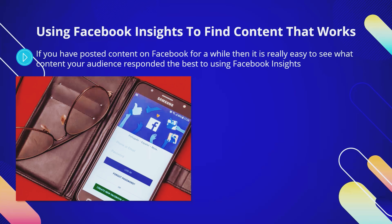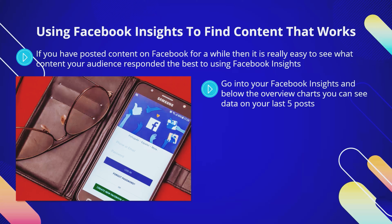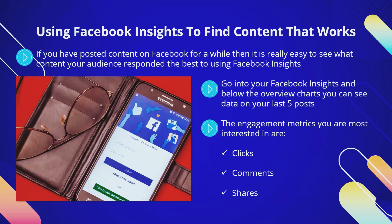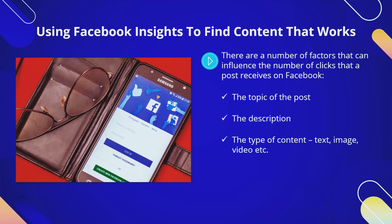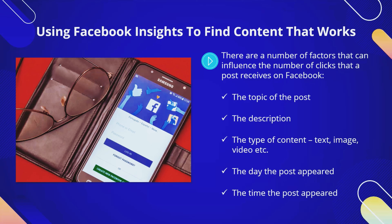Using Facebook Insights to find content that works: if you have posted content on Facebook for a while, it is really easy to see what content your audience responded the best to. Go into your Facebook Insights and below the overview charts you can see data on your last five posts, then choose to look at all your posts by clicking 'See All Posts.' You will be able to see the reach and engagement levels of each post. The engagement metrics you are most interested in are clicks, comments, and shares. The factors that influence clicks include the topic, description, content type, day, and time of the post.